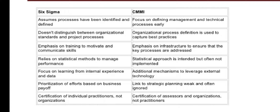In 6 Sigma, emphasis on training is done to motivate and communicate skills, whereas in CMMI the emphasis is on infrastructure. 6 Sigma relies on statistical methods to manage performance, while CMMI's statistical approach is intended but not often implemented. 6 Sigma focuses on learning from internal experience and data, while CMMI provides additional mechanisms to leverage external technology. In CMMI, prioritization of efforts and links to strategic planning are weak and often ignored. Certifications also differ between the two.